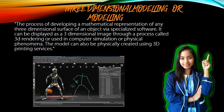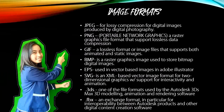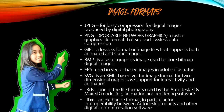3D modeling: the process of developing a mathematical representation of any three-dimensional surface of an object via specialized software. It can be displayed as a three-dimensional image through a process called 3D rendering, or used in a computer simulation of physical phenomena. The model can also be physically created using 3D printing services.